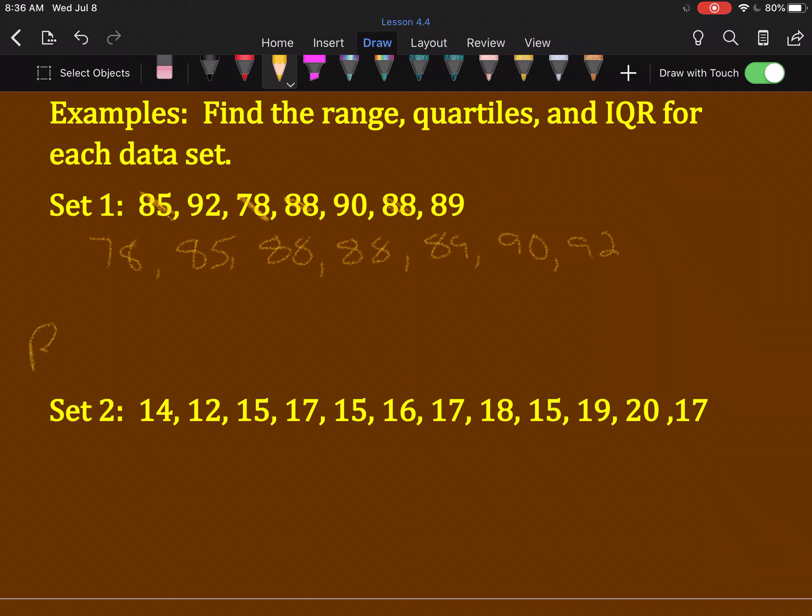So, range is just high number minus low number. So, 92 take away 78 is 14.